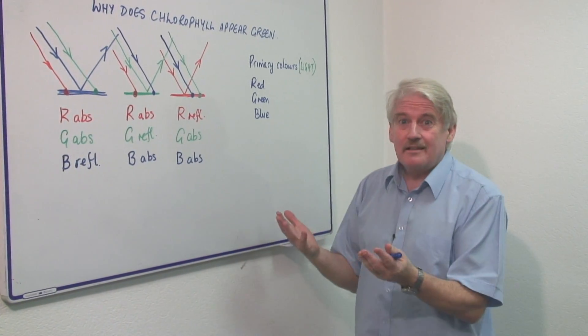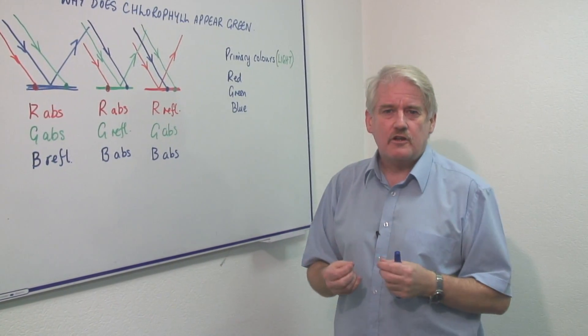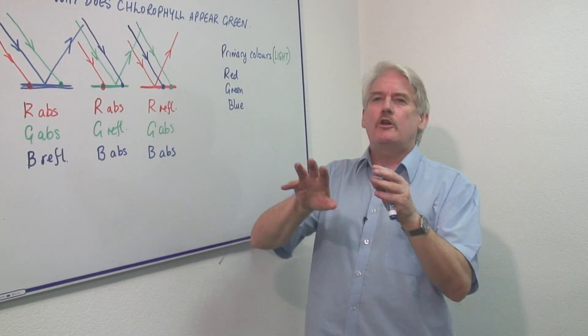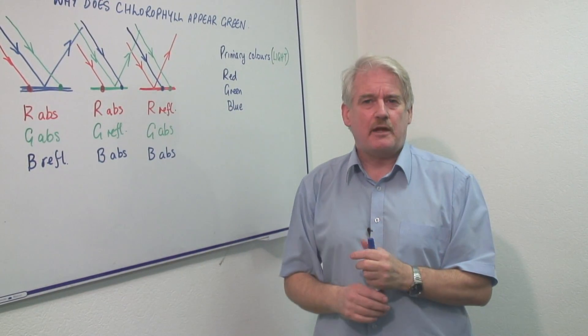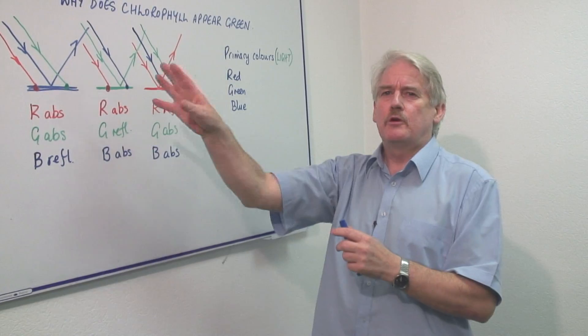First of all, light is not white. We know it's a mixture of colors, and you've all seen the experiment with a prism where you project a spectrum onto the wall. The spectrum goes from red at one end to blue at the other.